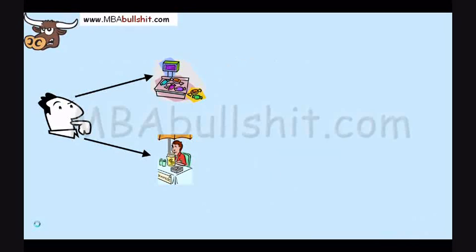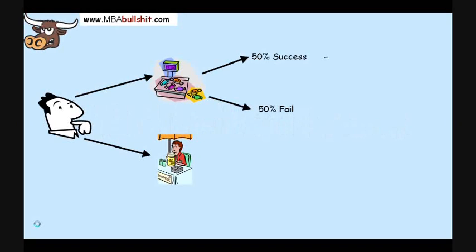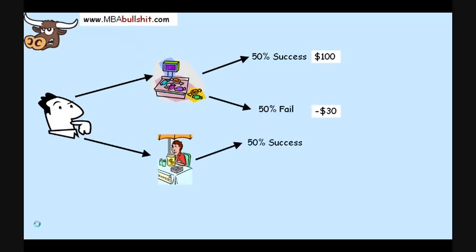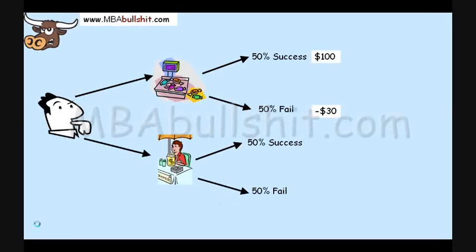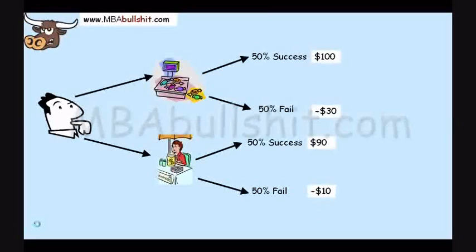Now, let's take the story a step further. What if the candy shop had a 50% chance of success and also a 50% chance of failure? If your candy shop is a success, you would earn $100; if it was a failure, you would lose $30 — that's a negative $30. On the other hand, if you have a lemonade stand, you also have a 50% chance of success and a 50% chance of failure. If it's a success, you would earn $90; if it's a failure, you would lose $10.